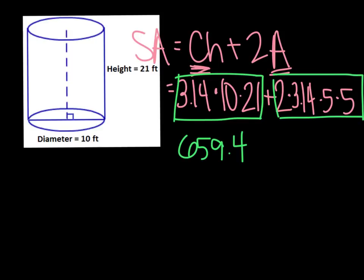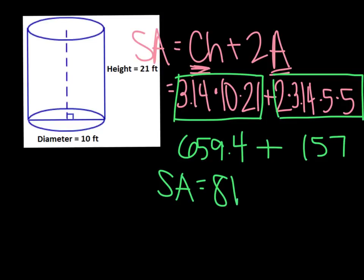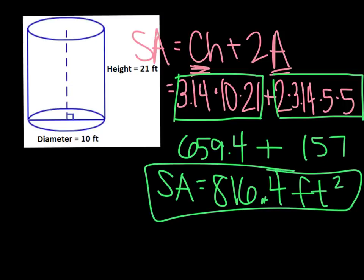Then chunk again and take 2 times 3.14 times 5 times 5, which gives you 157. Once you've multiplied both chunks, add them together to find your surface area. Your surface area answer ends up being 816.4. We're talking about feet, and surface area is area, so it's square feet.